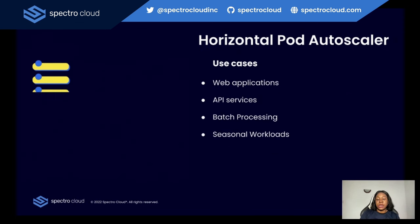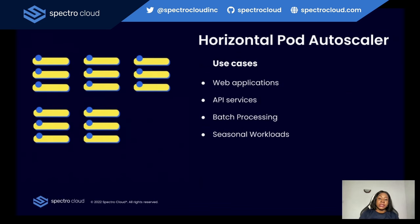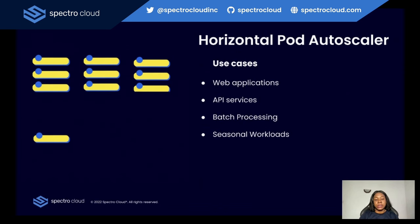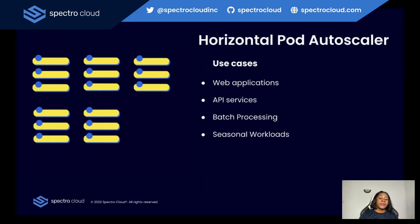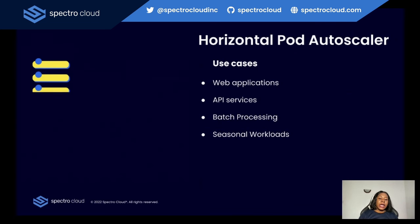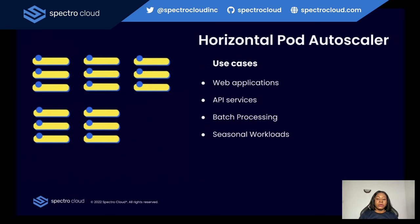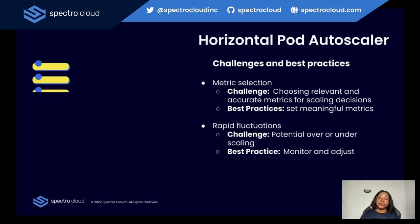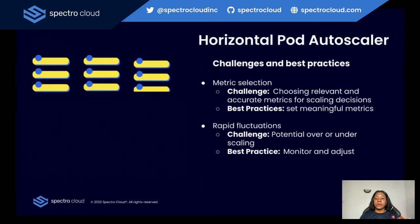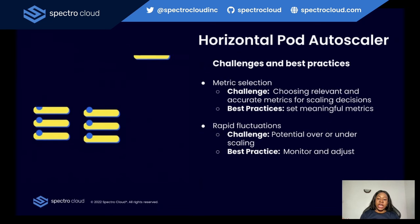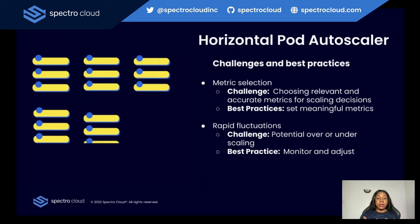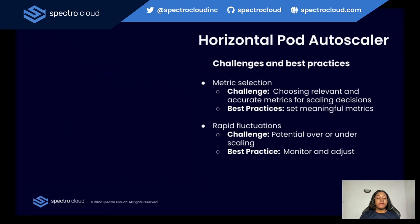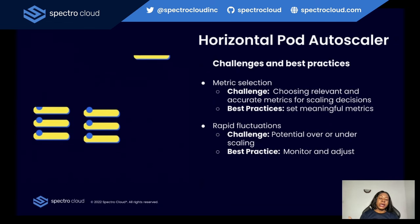Where is HPA most useful? It is useful in scaling web applications that are based on HTTP. Another use case is API services that are responding to increased demand. There's also batch processing during peak hours, and you can use it when managing seasonal workload fluctuations. It comes with its own challenges — one is being able to choose the right metrics for scaling decisions, and there's also the challenge of potentially over- or under-scaling. Best practices include setting meaningful metrics for scaling your application and monitoring your HPA and adjusting accordingly.